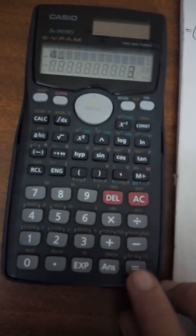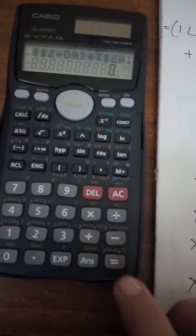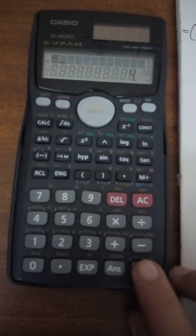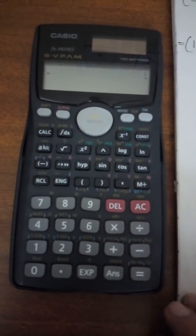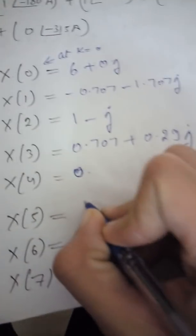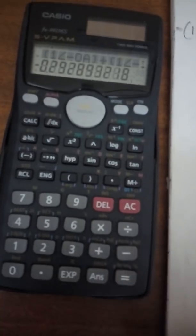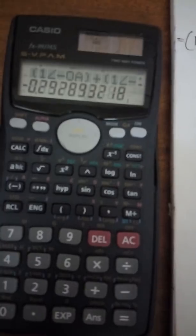Press Calc and enter 4 for X(4): the real part is 0, and the imaginary part is also 0, so X(4) equals 0. Press Calc and enter 5 for X(5): the real part is 0.707, and Shift equals gives minus 0.29j.